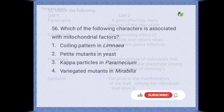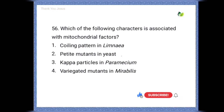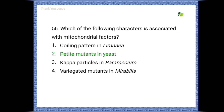Which of the following characters is associated with mitochondrial factors? Options are coiling pattern in Limnaea, petite (p-type) mutants in yeast, kappa particles in Paramecium, variegated mutants in Mirabilis. The correct option is p-type mutants in yeast.